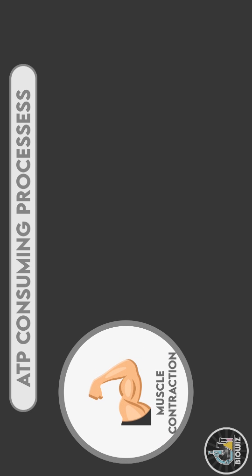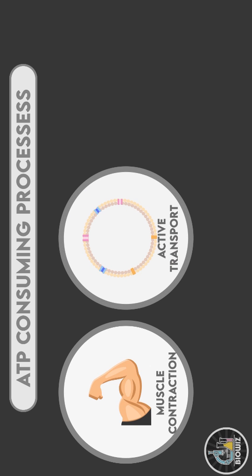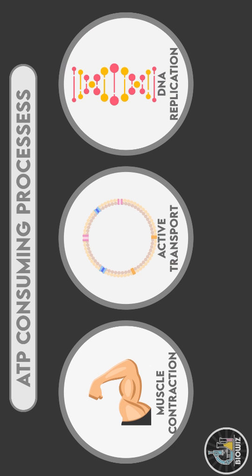The energy released during hydrolysis of ATP is used for almost all the processes of the body including muscle contraction, active transport and even DNA replication.